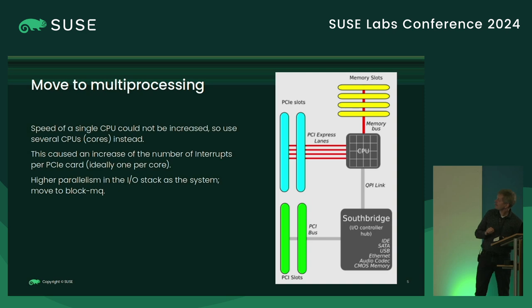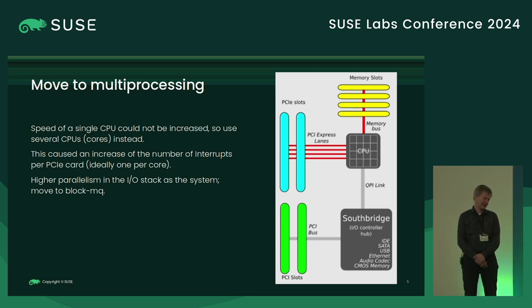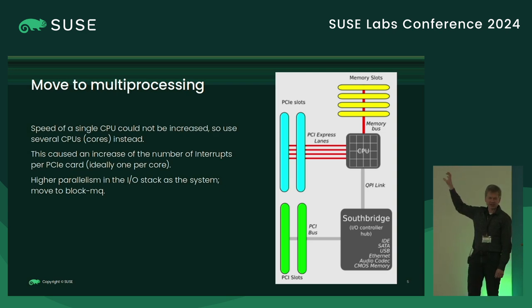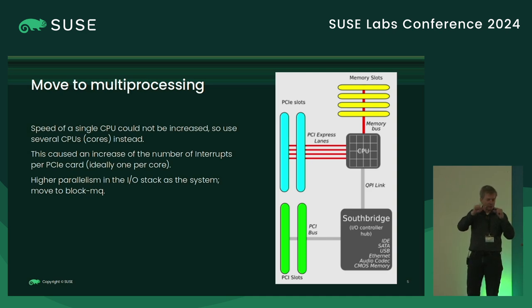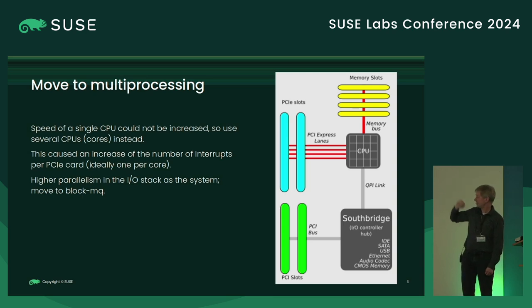Then they figured they were hitting physical limits and couldn't just increase CPU speeds anymore — stuck at 4 GHz. Selling a new CPU at the same speed doesn't make the marketing department happy. So the solution: if one CPU doesn't cope, just add more CPUs. They invented multiprocessing and packaged more CPU cores on the same chip. That way you can scale, and you get higher parallelism within the CPU itself with multiple threads.